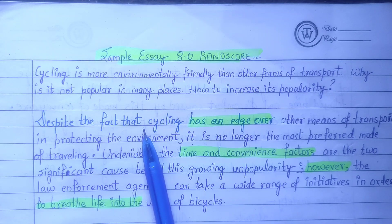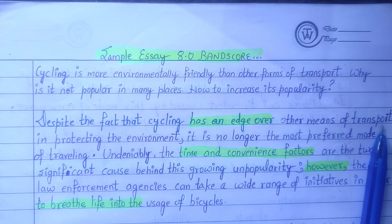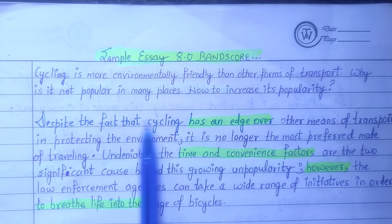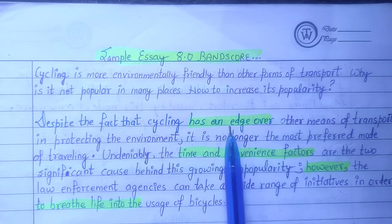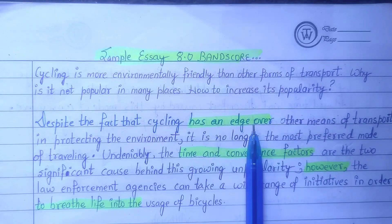So, 'despite the fact that cycling has an edge over other means of transport in protecting the environment.' The collocation 'has an edge over' means something has more importance than another. This collocation can be used in any essay. For example, if you are writing about teachers and parents' comparison, you can say 'teachers have an edge over parents' or 'parents have an edge over teachers.' Now you know how to use it.